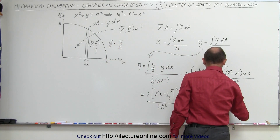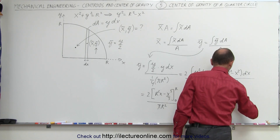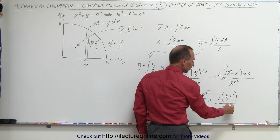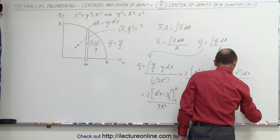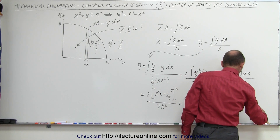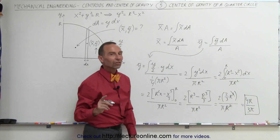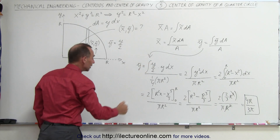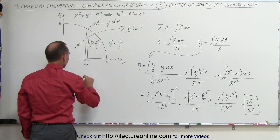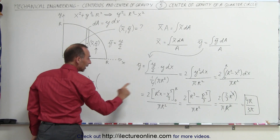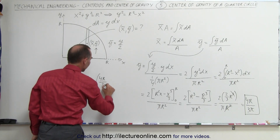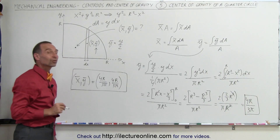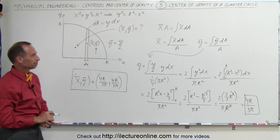Now I have r cubed minus a third of r cubed. That's 2 thirds of r cubed. So this is equal to 2 times 2 thirds of r cubed, divided by pi r squared. Notice the r squared divides into the r cubed, so 2 times 2 is 4, giving us 4r divided by 3 times pi. That would be the y-coordinate of the center of gravity of this object. Because of the perfect symmetry, the x-coordinate will be exactly the same thing. Therefore, the x-coordinate and the y-coordinate of the center of gravity are both equal to 4r divided by 3π. That's how we utilize those equations to solve for the center of gravity of a quarter circle.